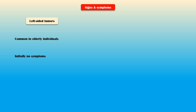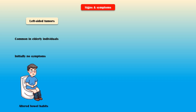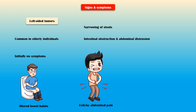Common signs and symptoms of left-sided tumors include altered bowel habits, narrowing of stools, intestinal obstruction and abdominal distention, colicky abdominal pain, constipation, passage of fresh bright red blood in stools — also known as hematochezia — nausea, and vomiting.